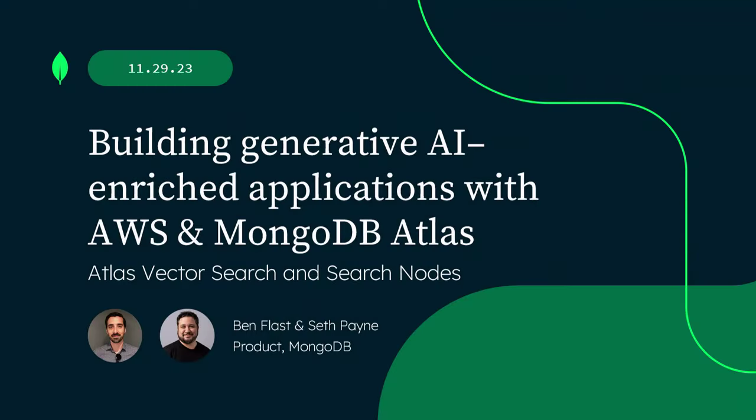All righty. Hello, everybody. My name is Ben Flast, and this is Seth Payne. We're from the product team at MongoDB, and we're excited to be here to talk about building generative AI-enriched applications with AWS and MongoDB Atlas. This is really going to be focused on Atlas Vector Search and a new capability inside of the platform called Search Nodes.